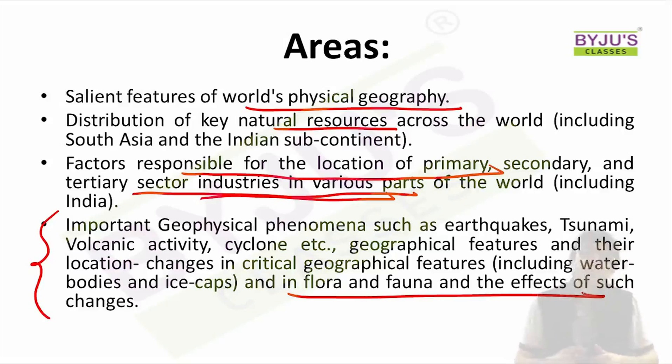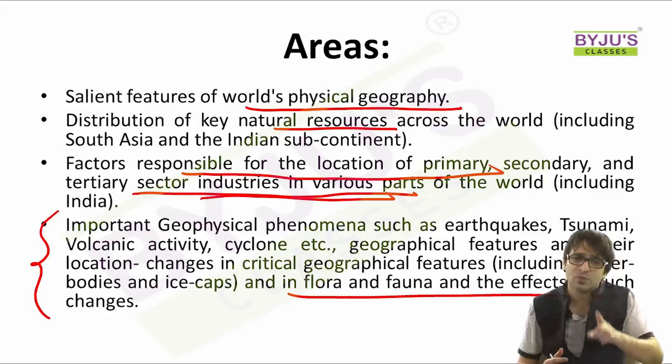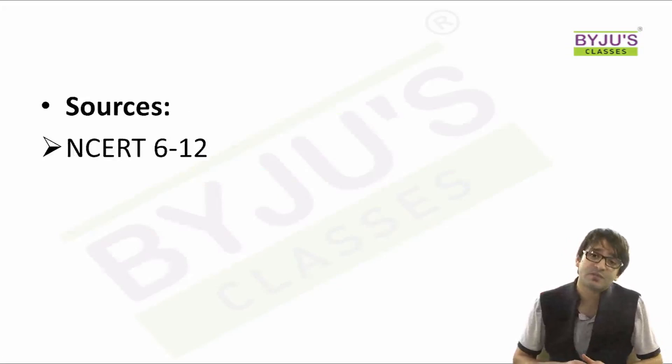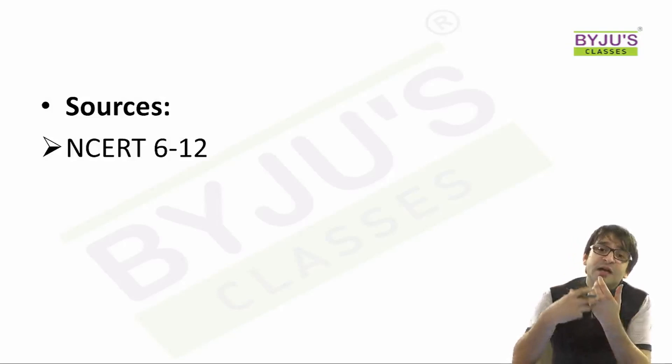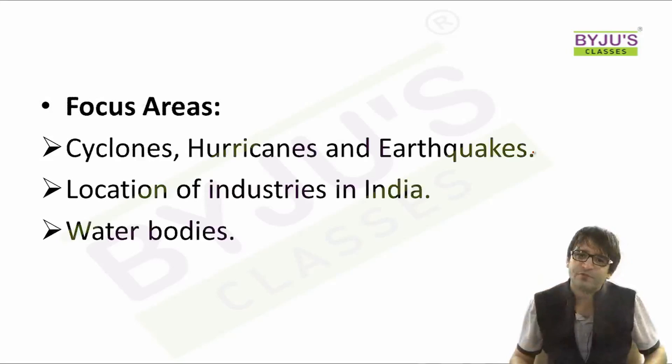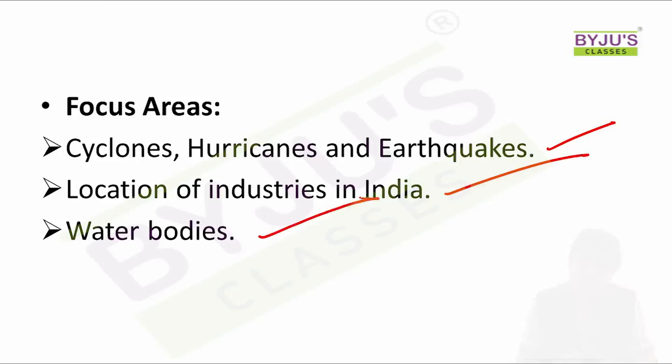How shall you proceed? One important and reliable source is the NCERT books, right from 6th standard to 12th standard. There is also an NCERT book called Resources that talks about the entire gamut of where important resources are available and located in different parts of the world, including India. The focus areas in the syllabus are: cyclones, hurricanes, and earthquakes; location of industries in India; water bodies; and the very important topic of climate change.